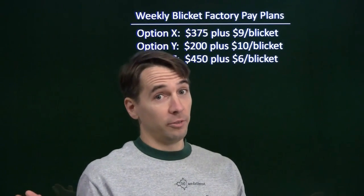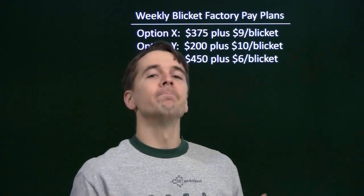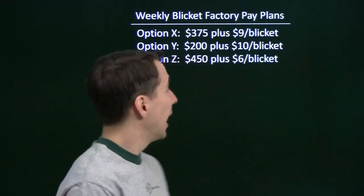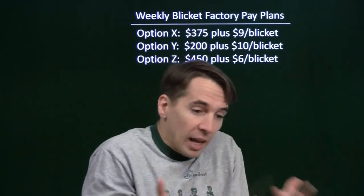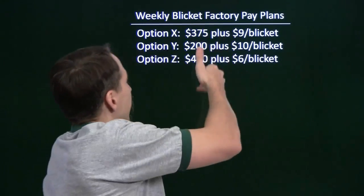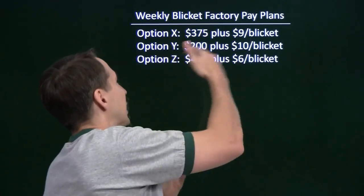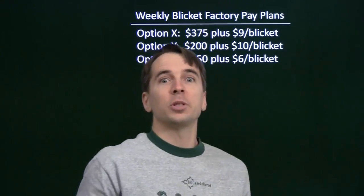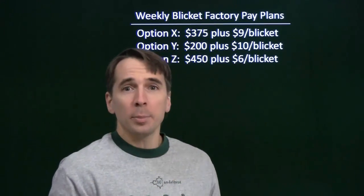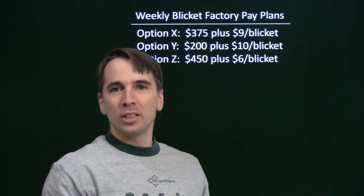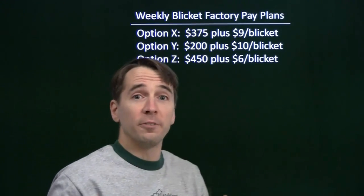I don't make a whole lot of money making free videos, so I have to have a second job to make ends meet. I make blickets. At the end of each week, they give me these options for a pay plan. I go there with a whole bunch of blickets that I've made, and they give me these options. It's a real pain because I have to calculate each of the three options to figure out which one's the highest. I want a nice little rule so I can look at how many blickets I have, not have to compute it each time, and know which option I should choose. So that's what we're going to figure out here.